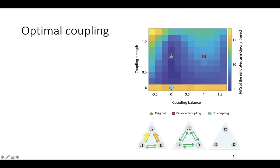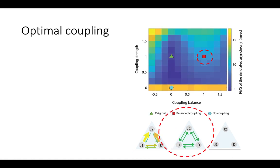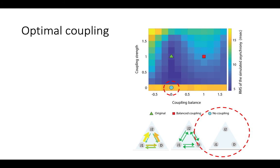Finally, we tested a large space of possible coupling constants, interpolating between the original, balanced coupling, and no coupling. Each point in this grid represents one simulated coupling constant, and the color represents the overall degree of ensemble synchronization we obtained. In this space, we found that the original coupling is nearly optimal.